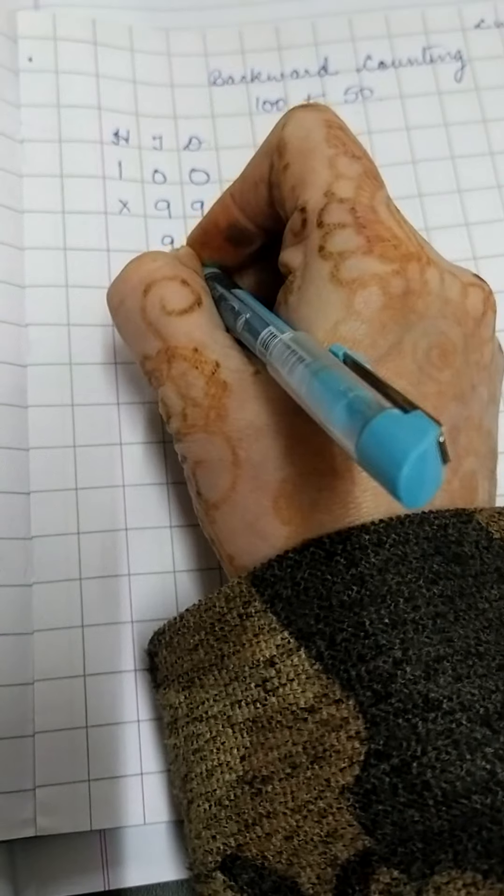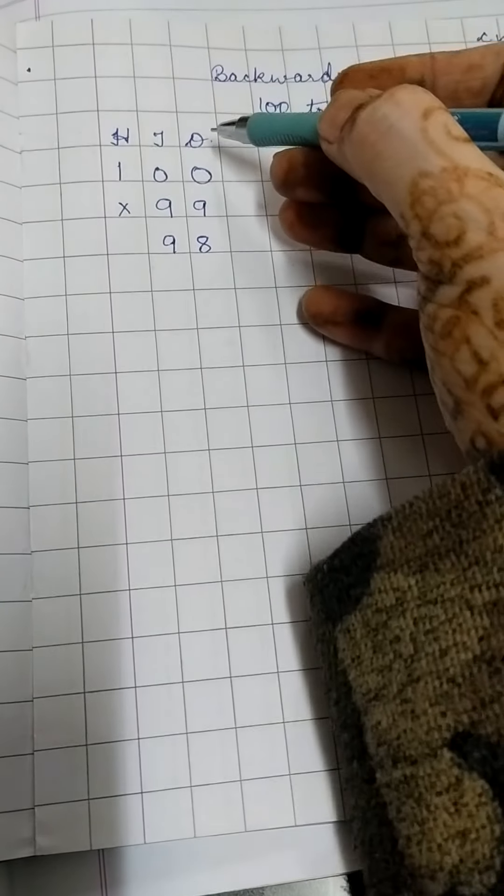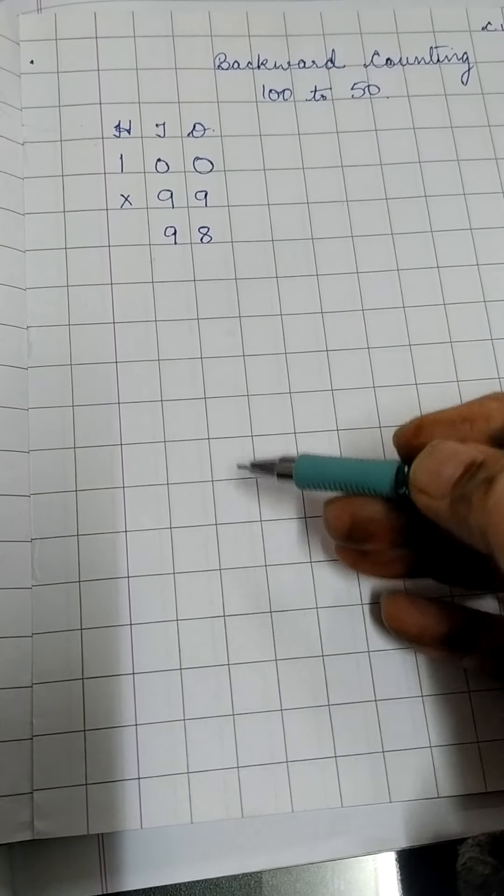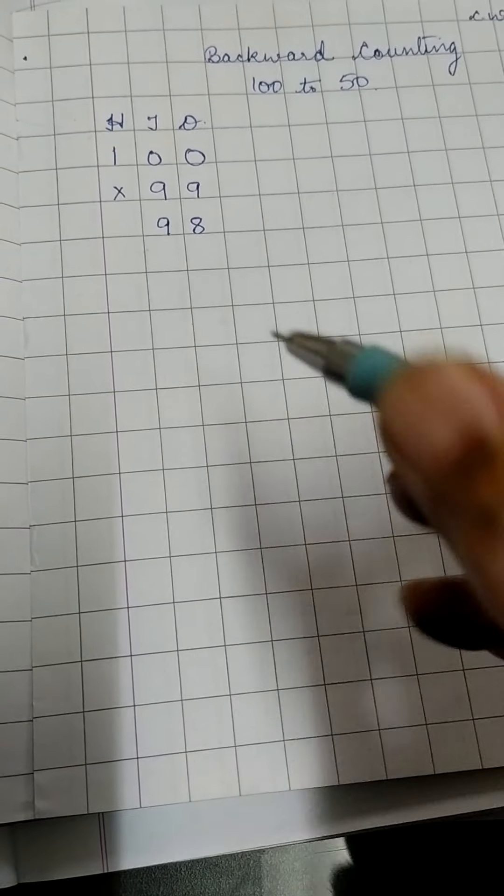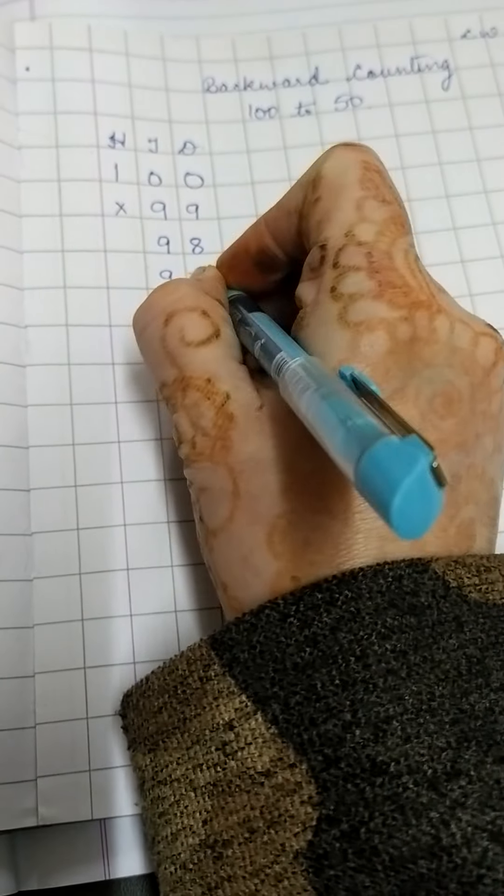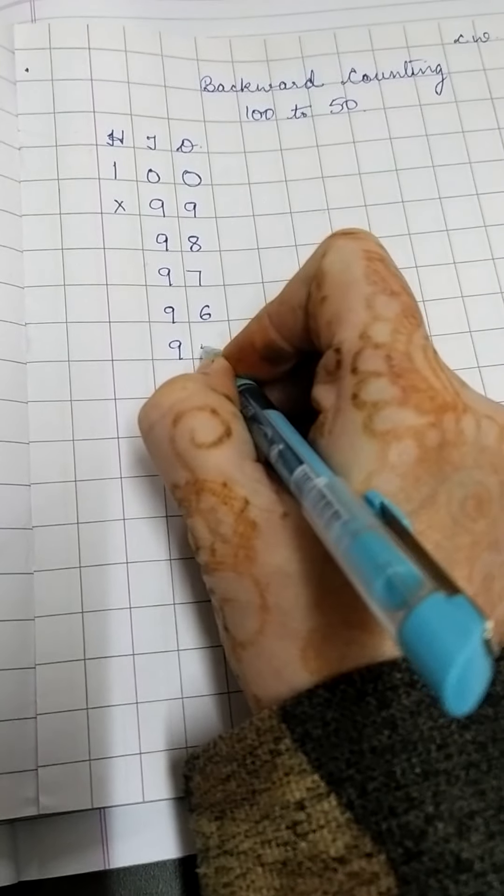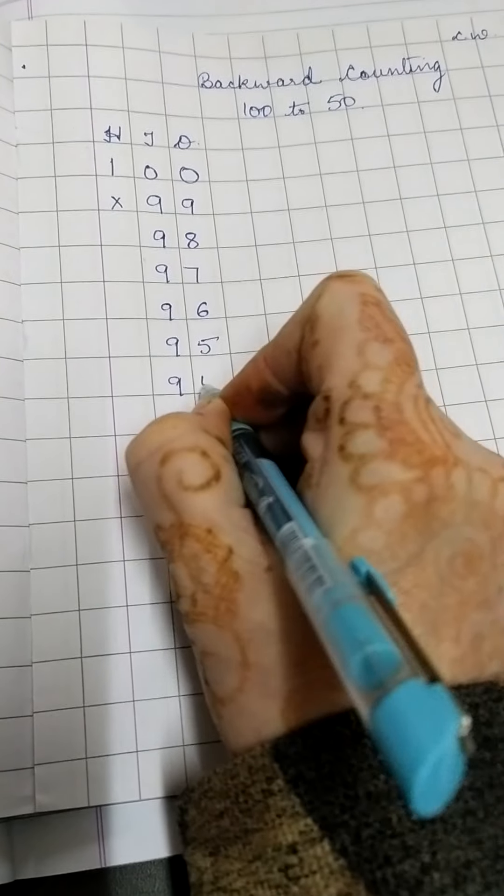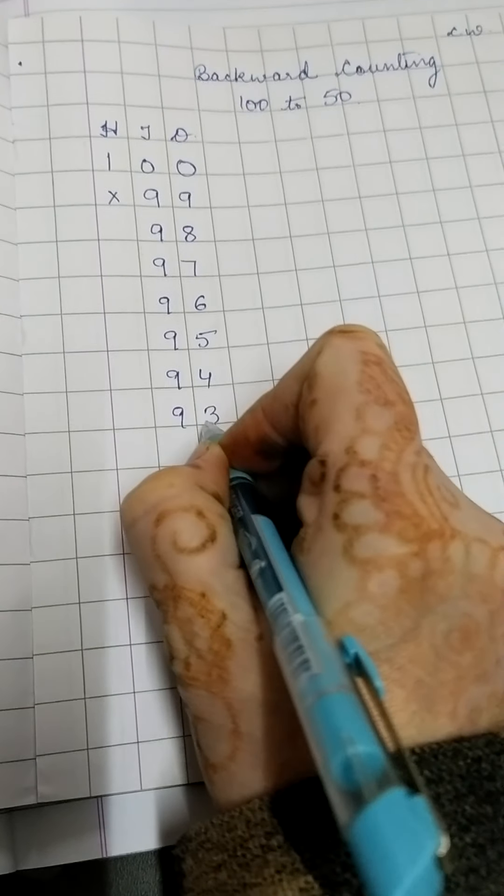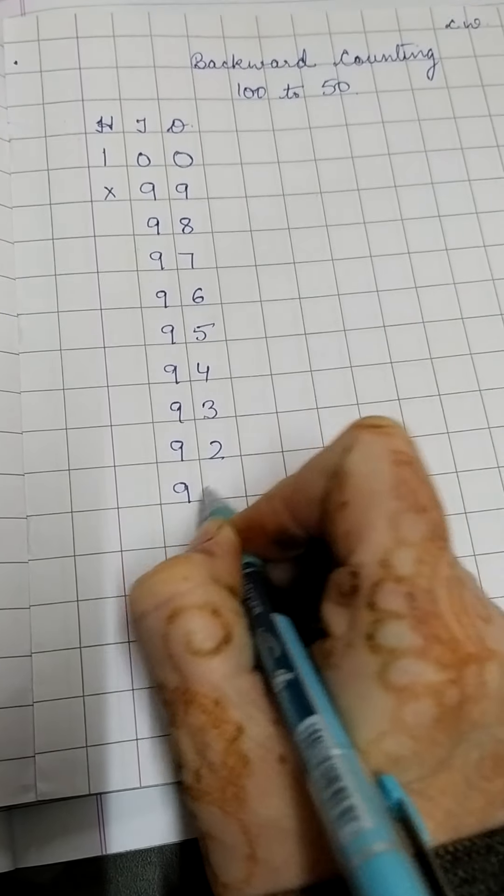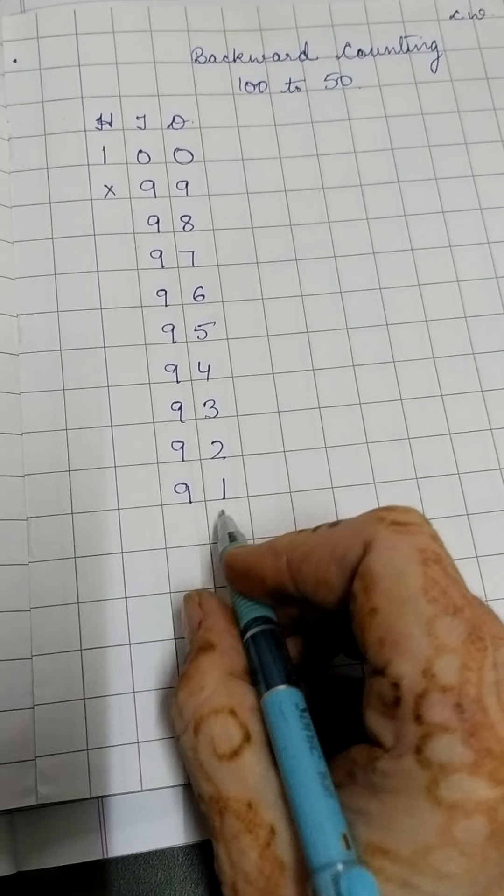Then 98. Only the 1s place will change. Rest the tens place will remain the same. 97, 96, 95, 94, 93, 92, 91.